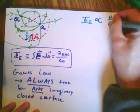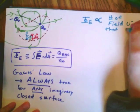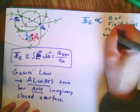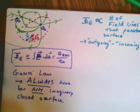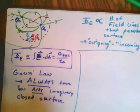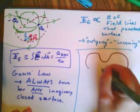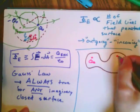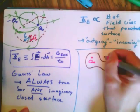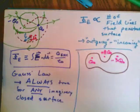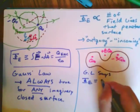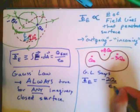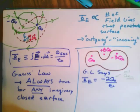One way to think of the flux is as something proportional to the net number of field lines that penetrate the surface — outgoing minus incoming. Every time a charge is placed inside, more field lines come out and flux increases. Gauss's law says the flux depends only on the charges inside, not outside. Here with two charges inside, the flux equals the total enclosed charge, negative 2q-naught divided by epsilon naught, regardless of the charge plus q-naught outside.